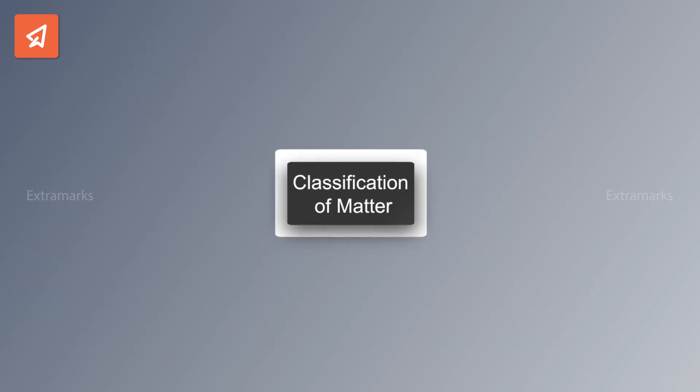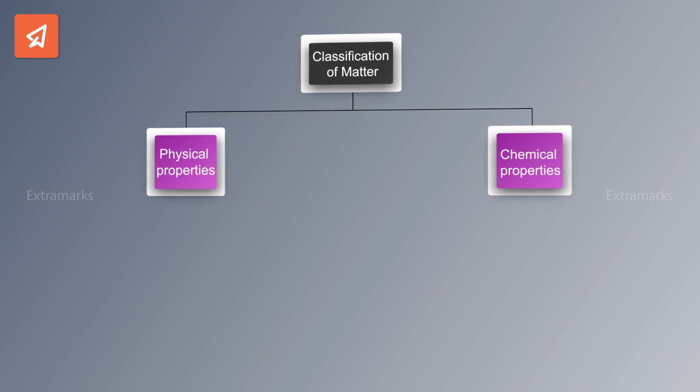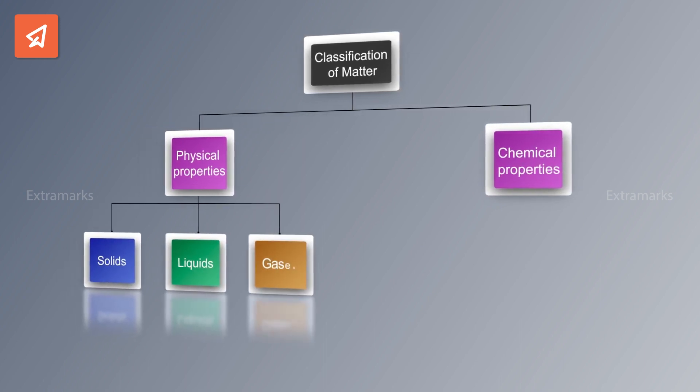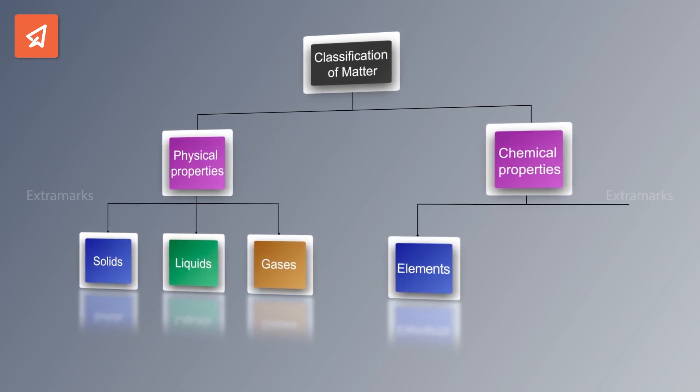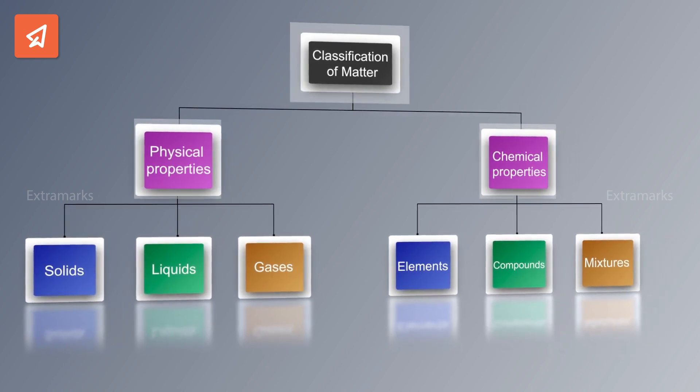The modern-day scientists can now evidently classify matter based on its physical and chemical properties. Physically, matter can be classified into solids, liquids, and gases. Chemically, matter can be classified into elements, compounds, and mixtures.